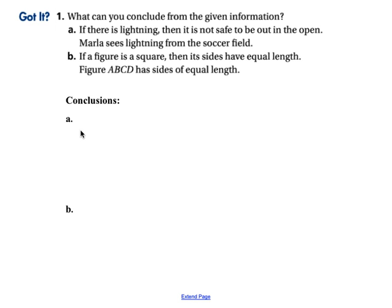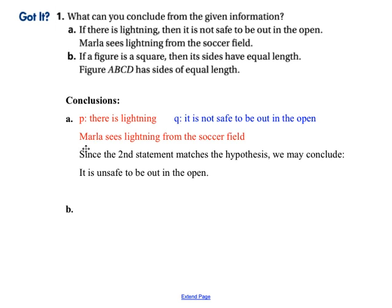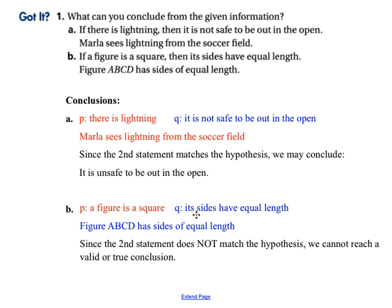Here are two examples for you to try on your own. Go ahead and pause the video. The first example says: if there is lightning, then it's not safe to be out in the open. Marla sees lightning from the soccer field. The hypothesis is there is lightning, and that matches the second given, so we can conclude it is not safe to be out in the open. The second says: if a figure is a square, then its sides have equal length. Figure ABCD has sides of equal length. This time the second statement matches the conclusion, not the hypothesis, so we cannot give a valid conclusion.